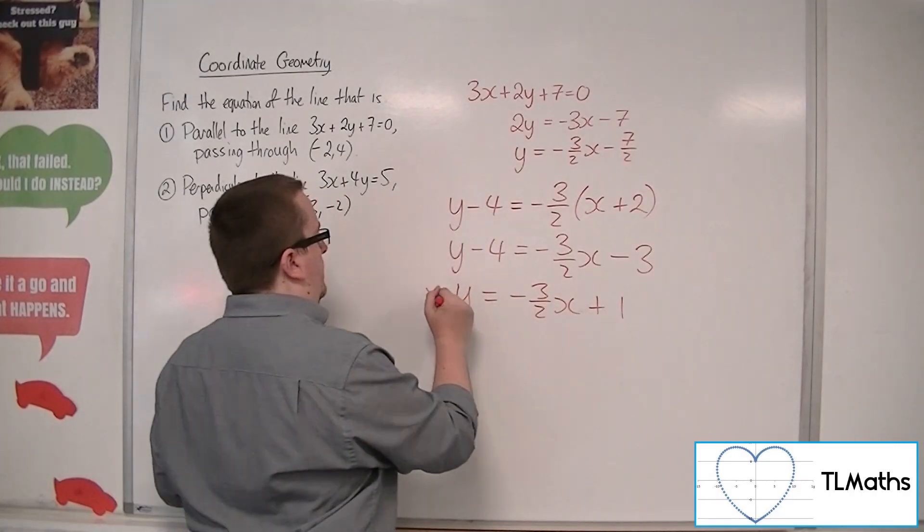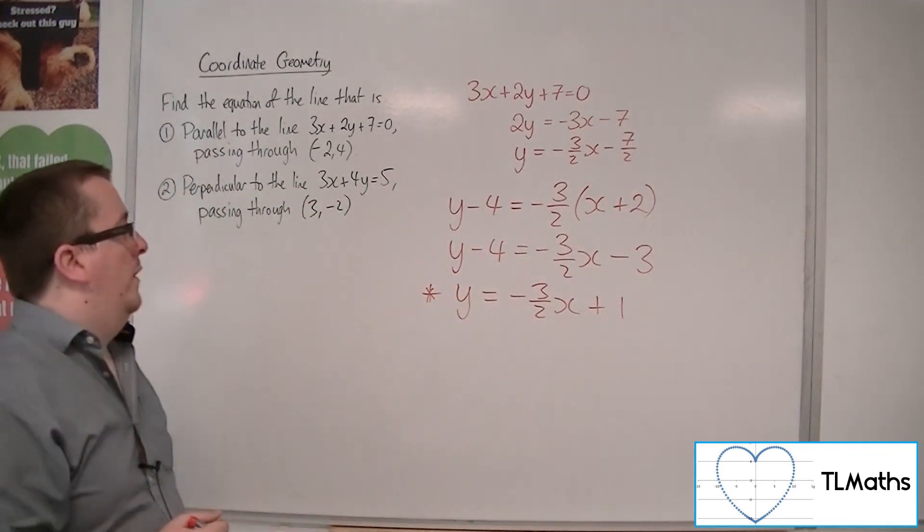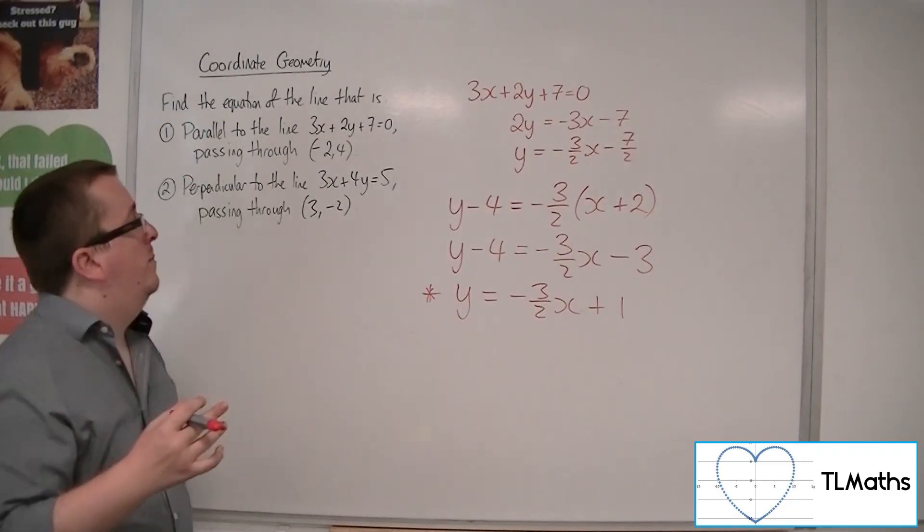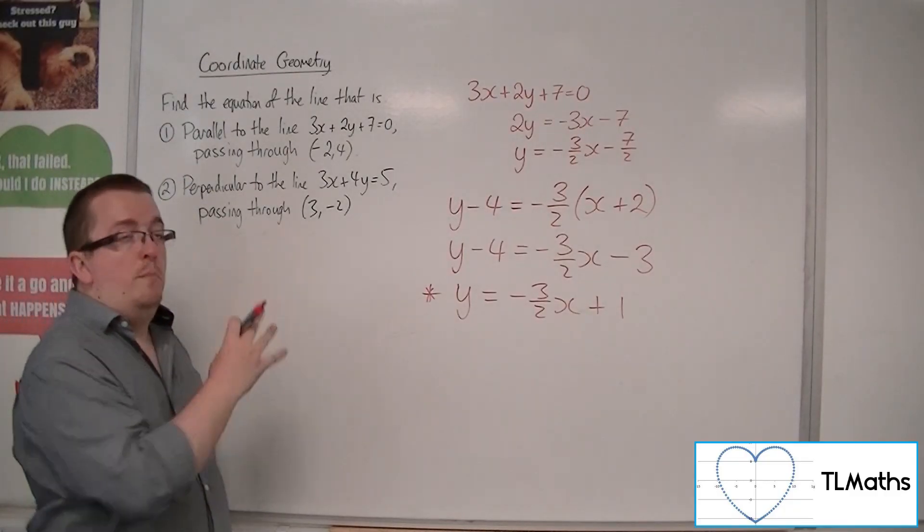And there is the answer I want. That is the equation of the line that's parallel to 3x plus 2y plus 7 equals 0, but going through minus 2, 4.